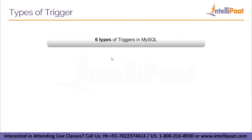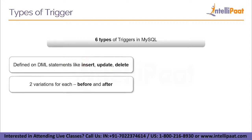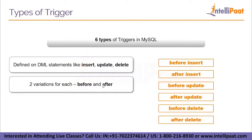Within row-level triggers in MySQL, there are six types of triggers, defined on DML statements — INSERT, UPDATE, and DELETE — with two variations each: BEFORE and AFTER. That makes six in total: BEFORE INSERT, AFTER INSERT, BEFORE UPDATE, AFTER UPDATE, BEFORE DELETE, and AFTER DELETE. The BEFORE variation fires before the execution of the statement, and the AFTER variation fires after the execution of the statement, as the names suggest.